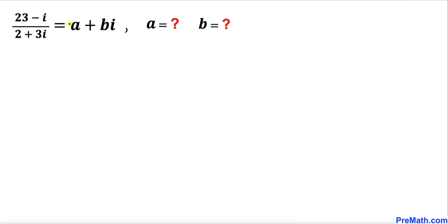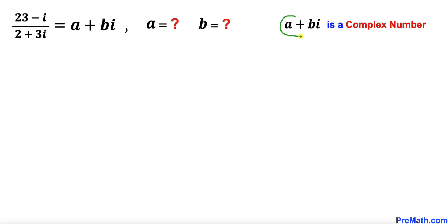Welcome to pre-math. In this video we have got this complex number question: 23 minus i divided by 2 plus 3i equals a plus bi, and we are going to find the value of a and b.